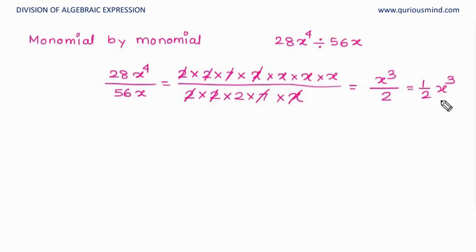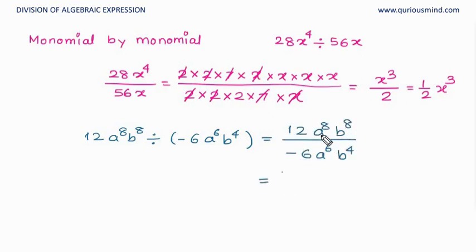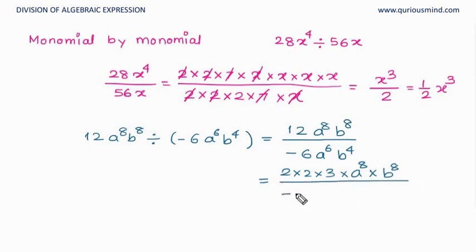Let's now try another one: 12a⁸b⁸ divided by −6a⁶b⁴. We write it in fraction format and write the irreducible factors. That is 2 × 2 × 3 × a⁸ × b⁸ divided by −1 × 2 × 3 × a⁶ × b⁴.